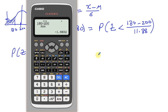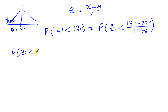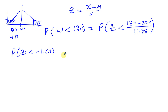The probability that Z is less than minus 1.68 — that's the standardized value for 180. Now we don't have Z as minus 1.68 in our table; the Z values start as positive values. So the area we're looking for corresponds to the probability that Z is greater than 1.68 by symmetry.